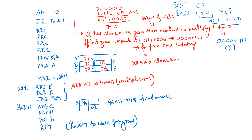After rotation, MOV D,A stores BCD2 (07H) into register D. BCD1 (02H) is already in register C. We clear the accumulator using XRA A, then load register E with 0AH (decimal 10), because we want to add the BCD2 value 10 times. We run a loop that adds register D to the accumulator each iteration.